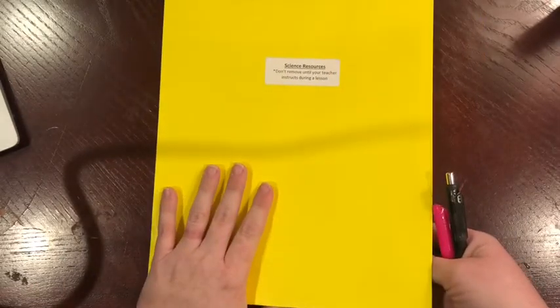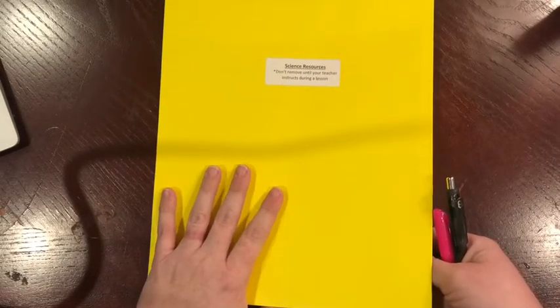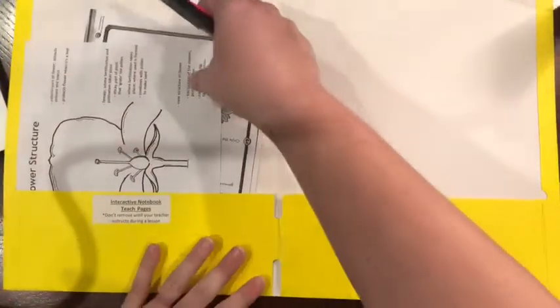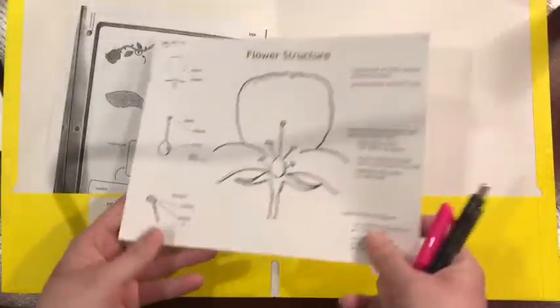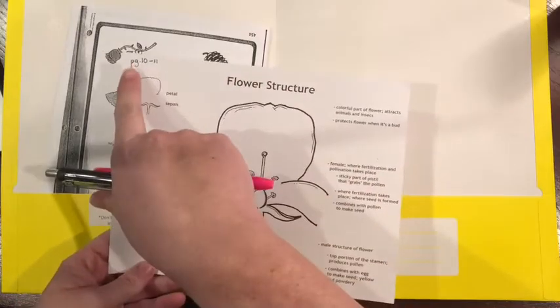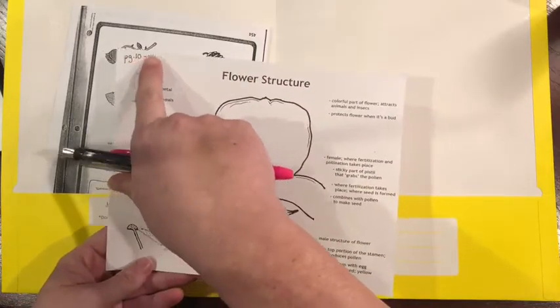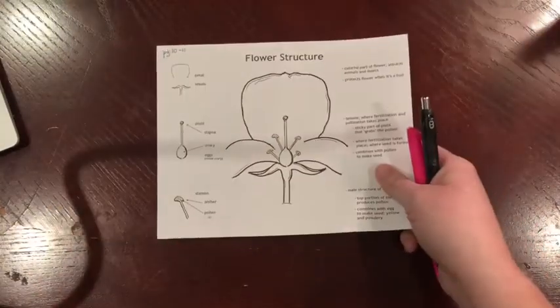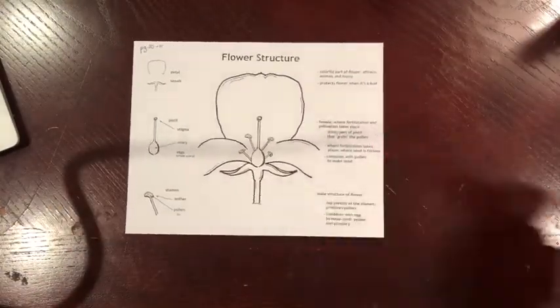When you get your yellow folder, remember not to take it out of your anchor binder, but go ahead and open it. You are going to grab the one paper that is called the flower structure — it says pages 10 and 11. Then close your yellow folder, make sure it's still in your anchor binder, and tuck that back in your basket.